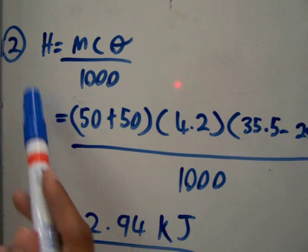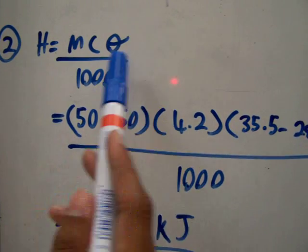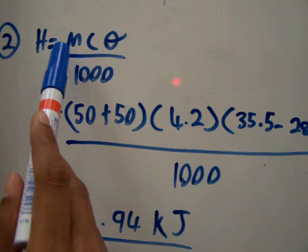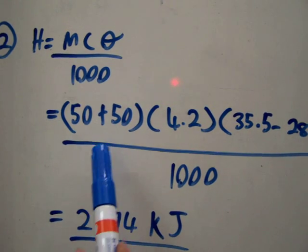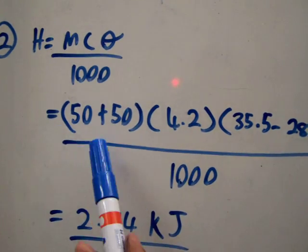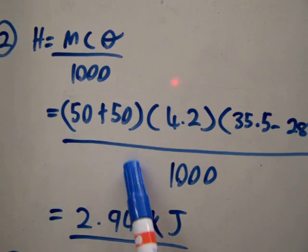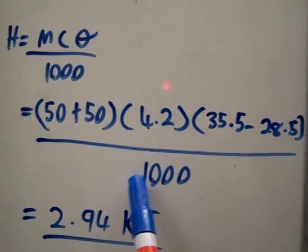You substitute into the second formula: H equals MCθ over 1000. The M is the mass of the solution, C is the specific heat, and θ is the temperature change of the solution.